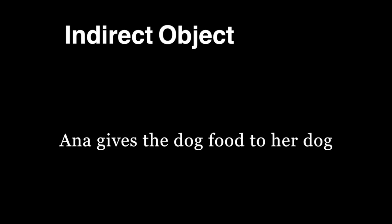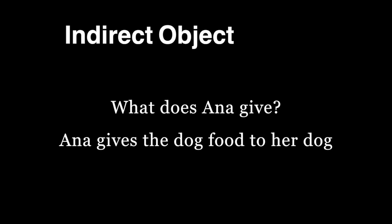An indirect object identifies to whom or for whom an action is done. Take the sentence, Anna gives the dog food to her dog. First, we can find the direct object. What does Anna give? The dog food is the direct object.